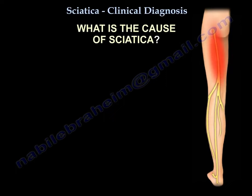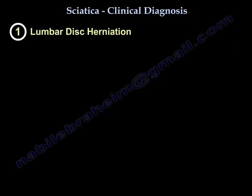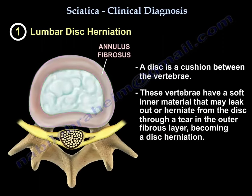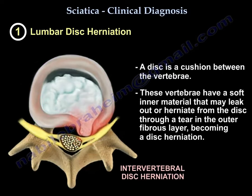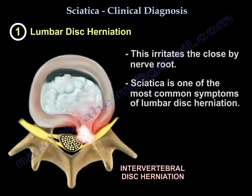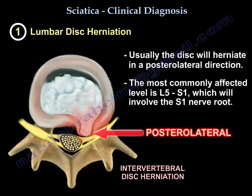What is the cause of sciatica? Number one: lumbar disc herniation. A disc is a cushion between the vertebrae — it has a soft inner material, and when this material leaks out or herniates through a tear in the outer fibrous layer, that becomes a disc herniation. This irritates the nearby nerve root. Sciatica is one of the most common symptoms of lumbar disc herniation. The disc usually herniates in a posterolateral direction, and the most commonly affected level is L5-S1, involving the S1 nerve root.